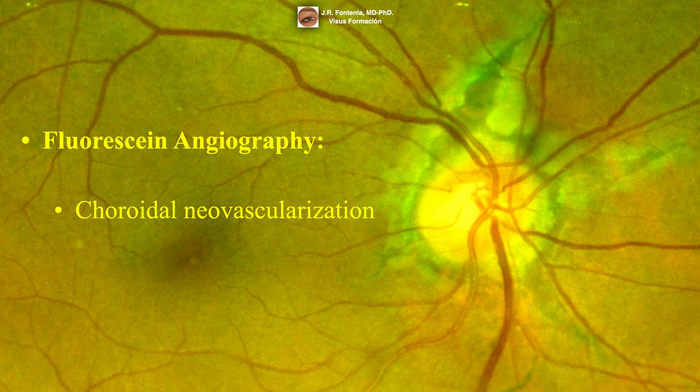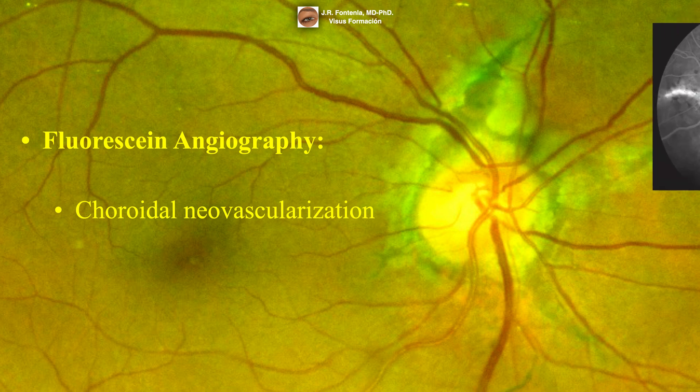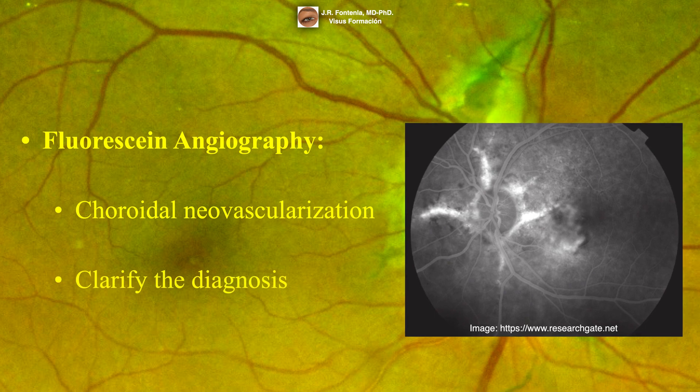Fluorescein angiography is an important tool in evaluating any patient with angioid streaks and visual symptoms, to rule out associated choroidal neovascularization. It may also help clarify the diagnosis when clinical findings are not definitive. Angioid streaks appear hyperfluorescent due to overlying retinal pigment epithelial atrophy.